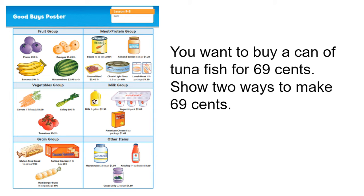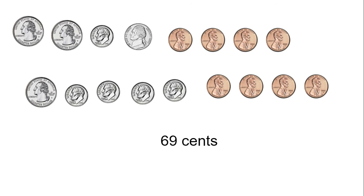Try to use one way with the least amount of coins possible, and then whatever your other way is, as long as it makes 69 cents it works. Once you're done, unpause the video and come back. All right, you should have your two ways written out. Here are my two ways: two quarters, a dime, a nickel, and four pennies makes 69 cents. Another way: one quarter, four dimes, and four pennies. You could also do all dimes, a nickel, and four pennies, or all nickels and pennies. No matter which way, you'll always end up with four pennies for that nine — as long as it equals 69 cents, you're right on the money.